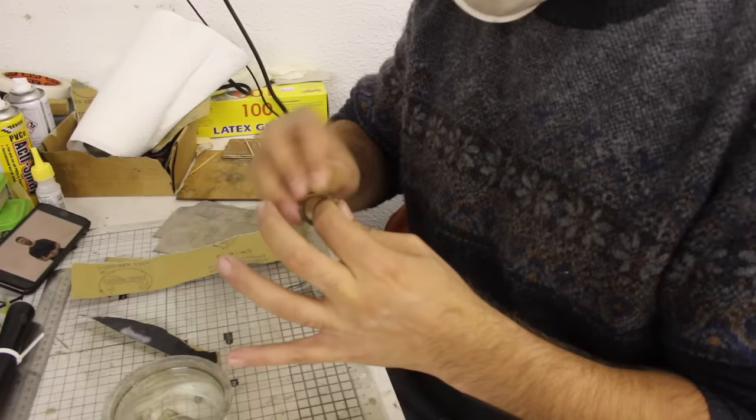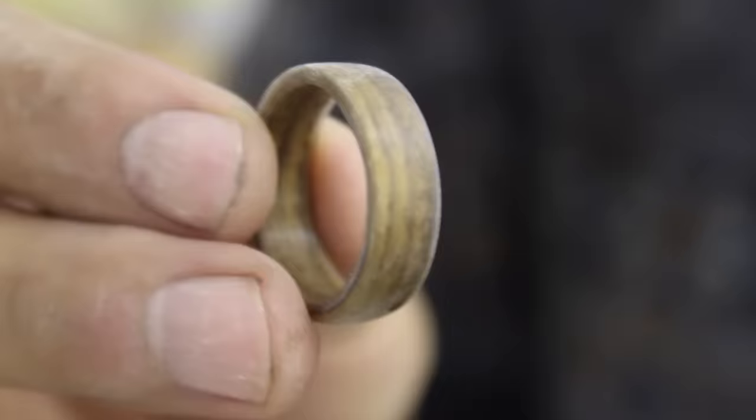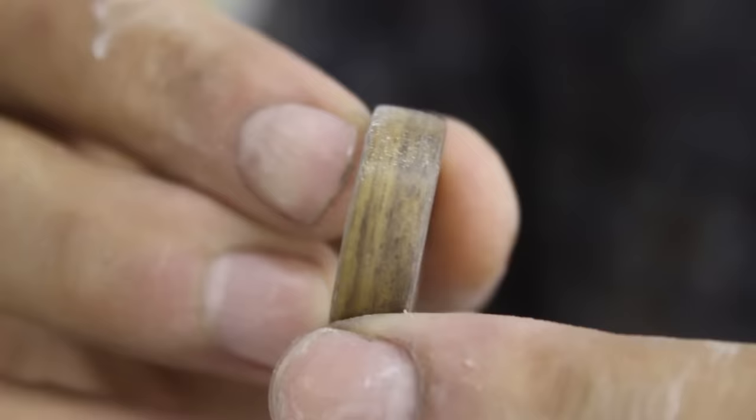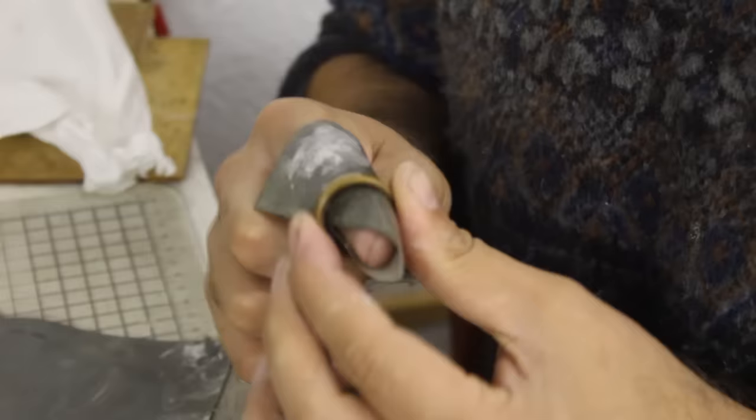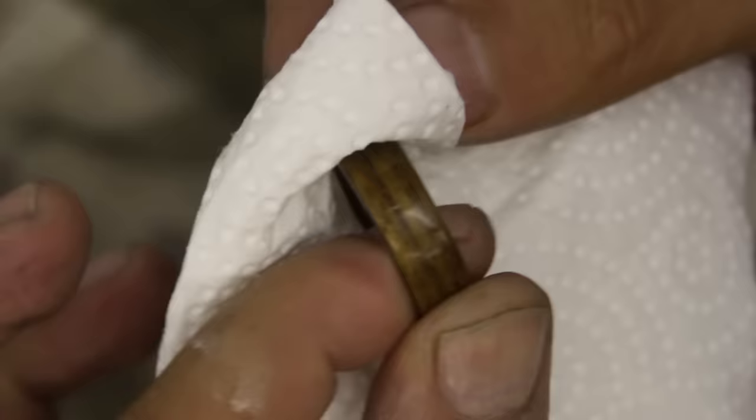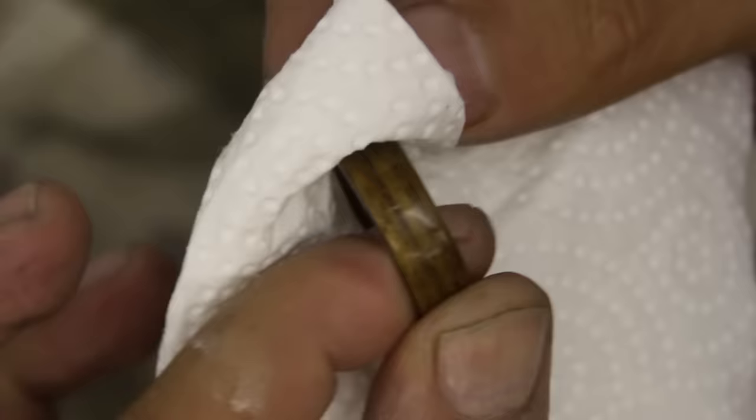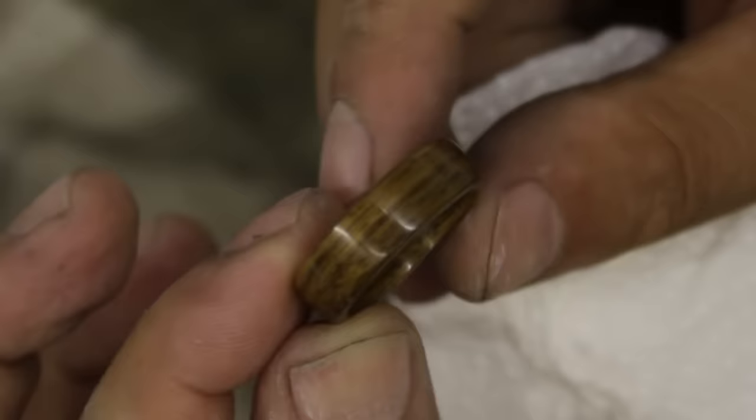When you do this by hand at first it feels like nothing's happening but as you work through progressively finer grits the ring kind of goes from this chalky appearance and just becomes more and more shiny. Eventually I was able to achieve this lovely satin finish and I was pretty happy with that but I wanted to bring it to an even more powerful shine and so to achieve that I used a burnishing cream.